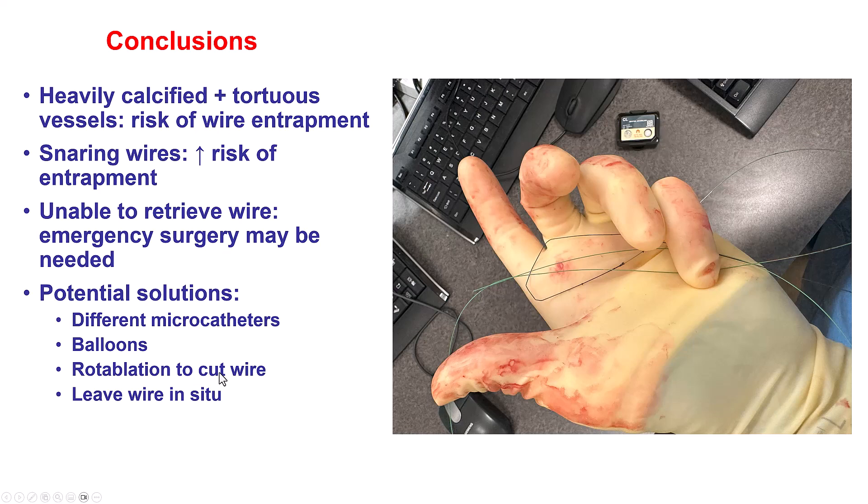However, there are a couple of other options that could potentially be done in similar situations. One is to use a rotablator to cut the guide wire — specifically, to get a rotablator and rotablate on the antegrade guide, trying to cut the retrograde wire. Another option might be to just leave the wire there: try to cut it on the retrograde side, and if not, cut the wire at the skin and let the wire remain inside the vessels of the body. Obviously less optimal, but this has to be weighed against the risk of going for emergency surgery.